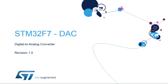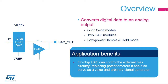Welcome to this presentation of the STM32F7 Digital-to-Analog Converter. This block is used to convert digital signals to analog voltages which can interface with the external world. The STM32F7 DAC converts 8- or 12-bit digital data to an analog voltage. Two DAC modules are embedded in the STM32F7, and the DAC can interface with external POTS or BIAS circuitry.